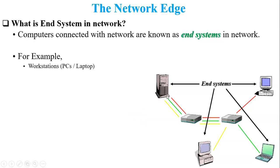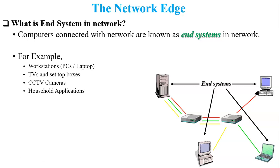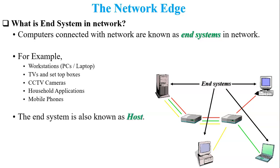Now let us see examples of different end systems in the network. The first one is workstations — PCs and laptops — already shown in the figure. Next are TVs and set-top boxes, CCTV cameras, household appliances, and mobile phones. Mobile phones act as an end system as well as an intermediate device, because we provide a hotspot to other mobile phones or laptops.